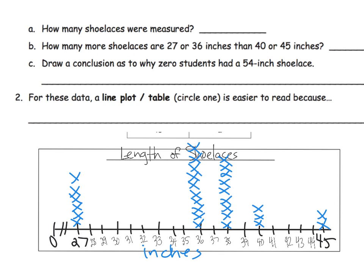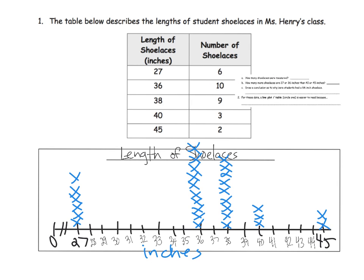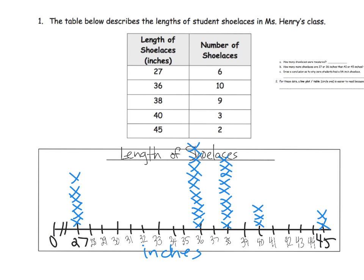Most importantly, what kind of conclusions can we draw as to why zero students had 54-inch shoelaces? We have 45, but what about 54? Or how about a four-inch shoelace? Why didn't anybody have a four-inch shoelace? For students, they get to vote: which was easier, the line plot or looking at the table? That's the kind of thing: allowing students to have opinions and really personalize this mathematics.